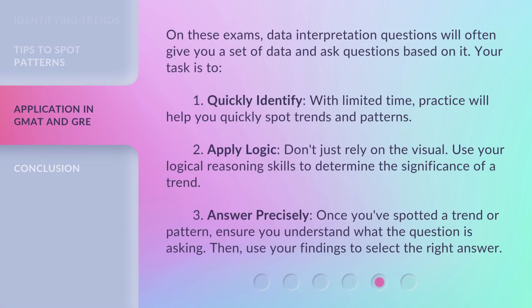On these exams, data interpretation questions will often give you a set of data and ask questions based on it. Your task is to: 1. Quickly identify — with limited time, practice will help you quickly spot trends and patterns. 2. Apply logic — don't just rely on the visual; use your logical reasoning skills to determine the significance of a trend. 3. Answer precisely — once you've spotted a trend or pattern, ensure you understand what the question is asking, then use your findings to select the right answer.